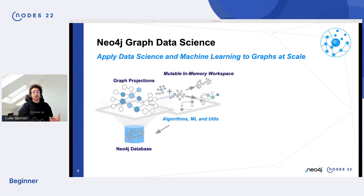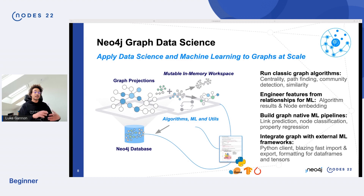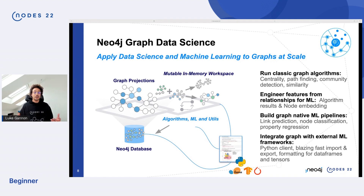With Neo4j Graph Data Science, you can apply data science and machine learning to graphs at scale. You can use graph projections taken from the Neo4j database, or use new procedures in the Python client to construct in-memory projections using the construct function. We give you an immutable in-memory workspace where you can run all algorithms and machine learning. You can run classic graph algorithms like centrality, pathfinding, and community detection, do feature engineering, generate node embeddings, and build in-graph native machine learning pipelines. This can all be integrated with external ML frameworks via the Python client and Apache Arrow, with results formatted to data frames.